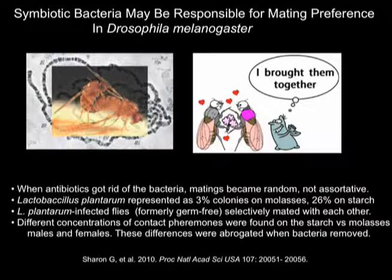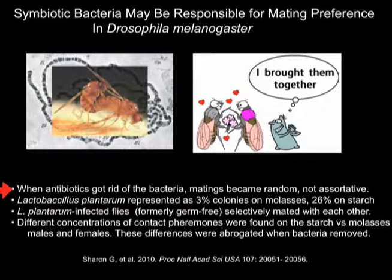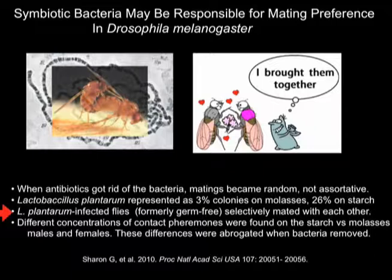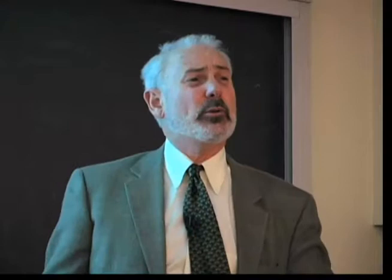Symbiotic bacteria may be responsible for mating preferences in Drosophila. It's been known anecdotally that Drosophila like to mate with those who ate the same food as larvae. When antibiotics get rid of the bacteria, matings become random, not assortative. Those Drosophila whose larvae ate molasses prefer others who ate molasses; those with starch prefer starch. Lactobacillus plantarum seems to be the critical element — formerly germ-free flies infected with L. plantarum will mate with each other. It seems the bacteria help control the formation of contact pheromones used during reproduction.